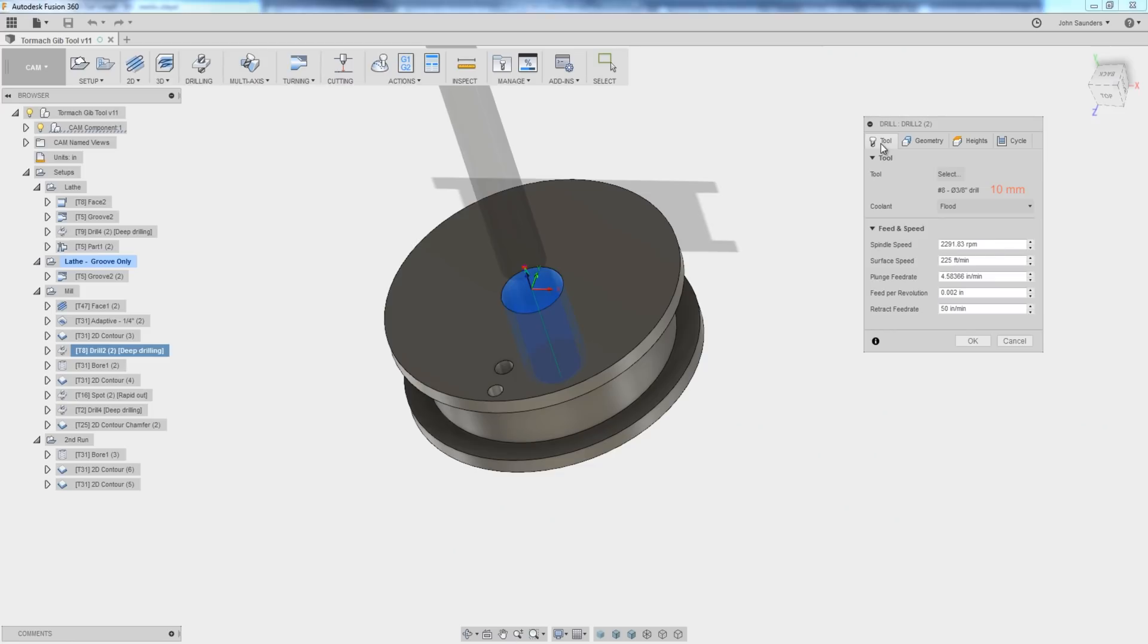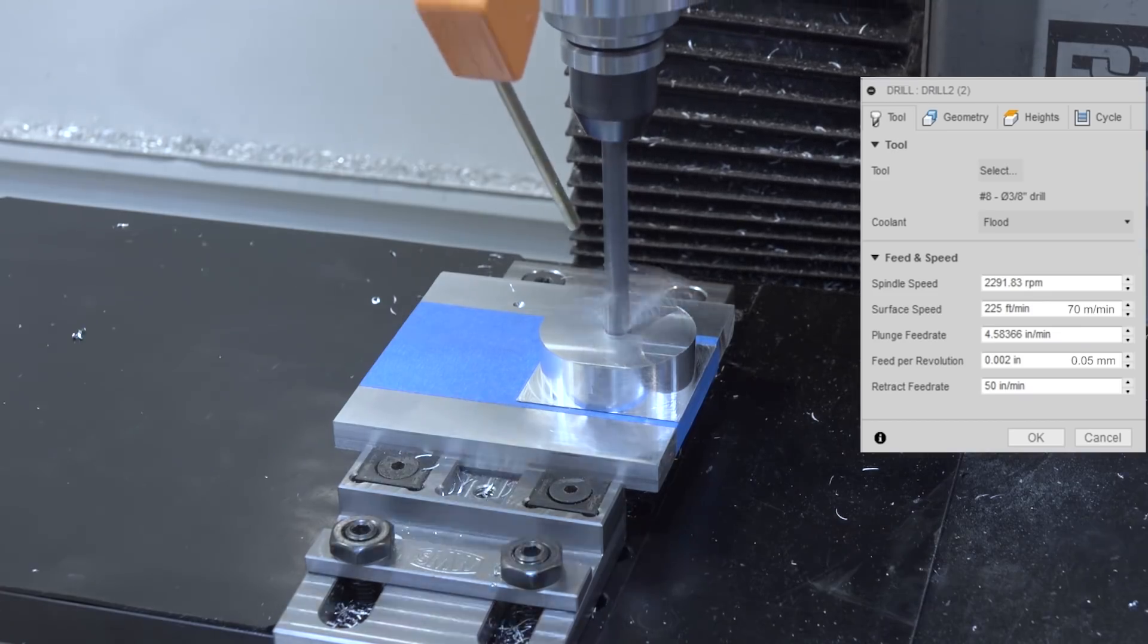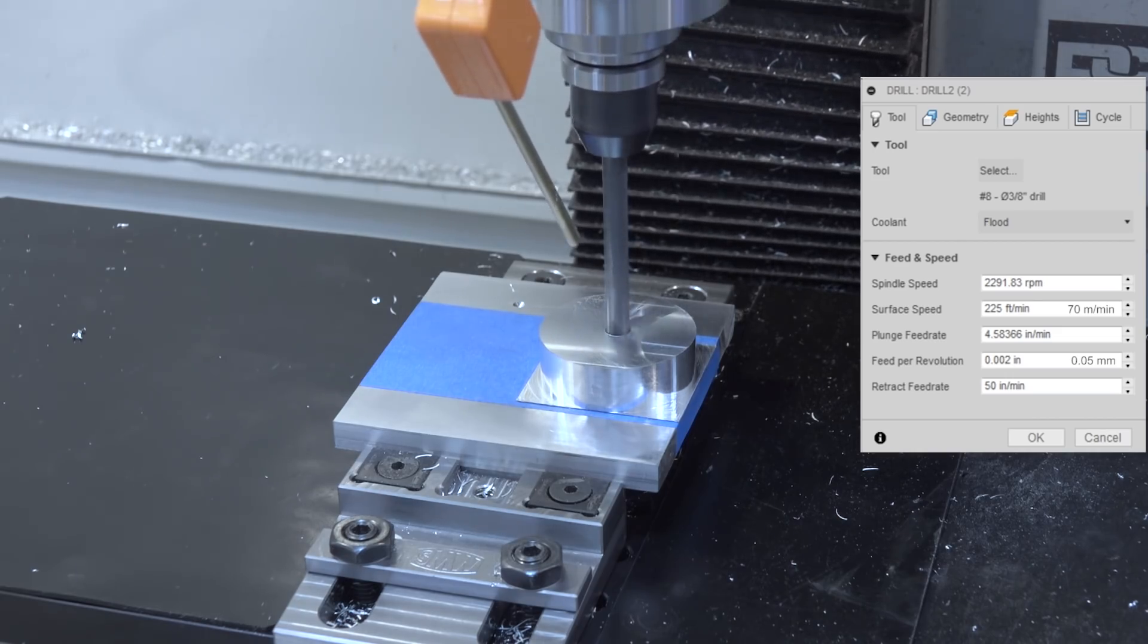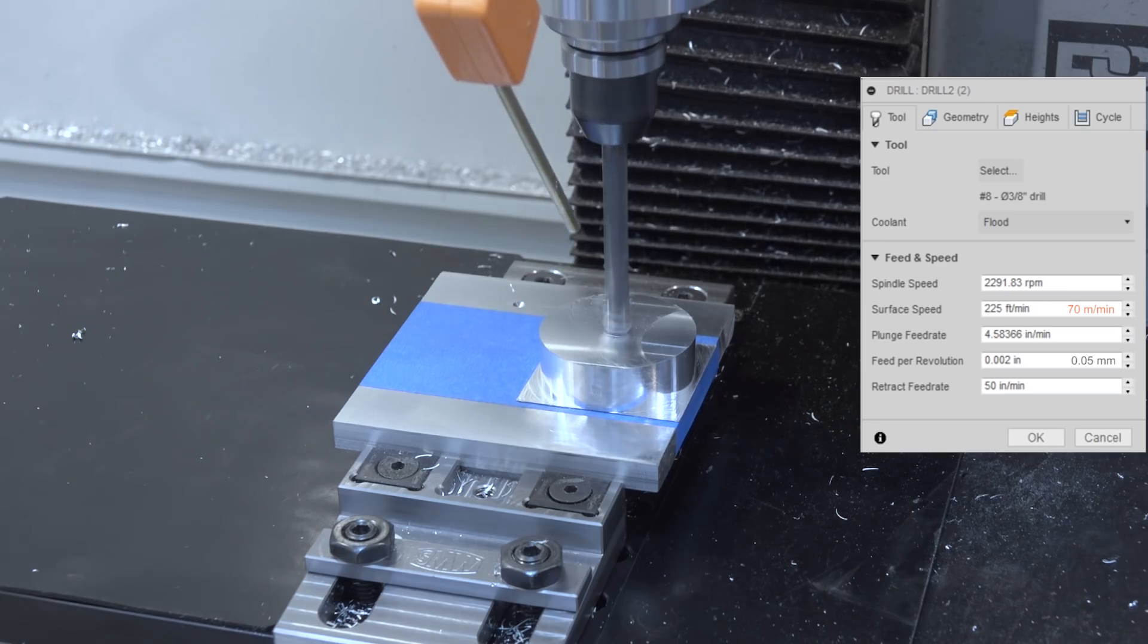We're going to want to press a pin in. So we're going to first drill it out. I keep a 3/8 inch drill set up. So we'll use that. So we're coming in at 225 surface feet per minute. That's about 70 meters a minute and feeding at 0.002 per rev.